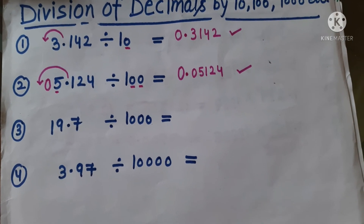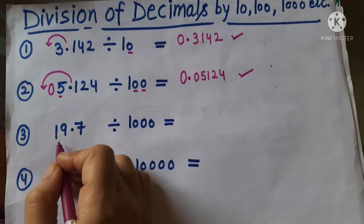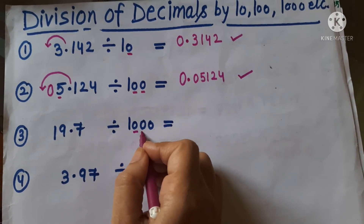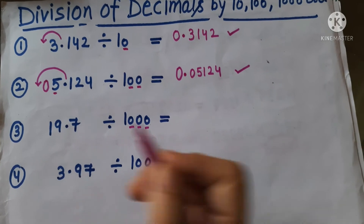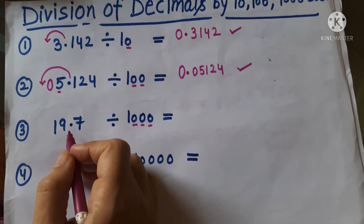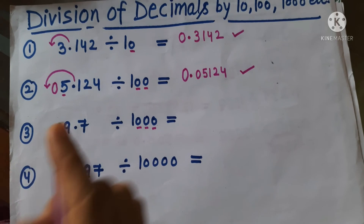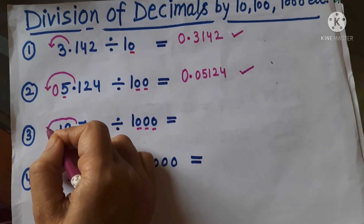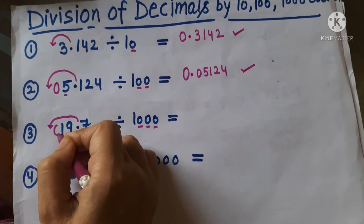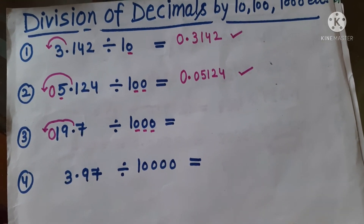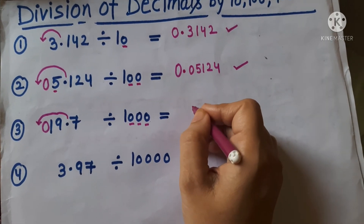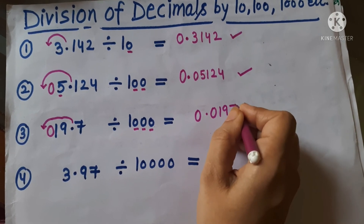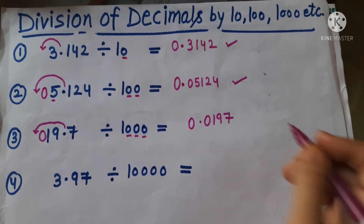Let's move on to the third example. Here is 19.7 which is divided by 1000. Here we have 3 zeros. So we will shift our decimal to the left side up to 3 places — 1, 2, and 3. We don't have a third place, so we will put 0. The answer is 0.0197. I think you got the concept.